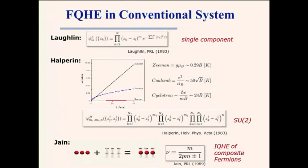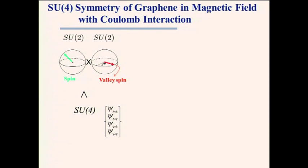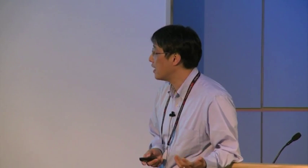Each electron's wave function has four degrees of freedom from spin and valley spin. The energy scale argument is the same: cyclotron energy far larger than any other scale, especially Zeeman. Therefore, like the 1/3 state in GaAs but with a four-component SU(4) spinor structure, the FQHE in graphene is expected to be quite different and requires understanding this SU(4) symmetry.